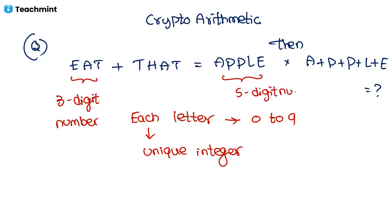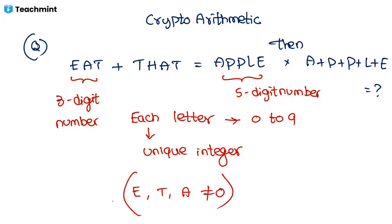DOT is a four-digit number, and we know the leftmost digit cannot be zero. So E ≠ 0, T ≠ 0, and A ≠ 0. For example, 023 is not a three-digit number — it's just 23, a two-digit number. Keep all these conditions in mind; this is a basic question.